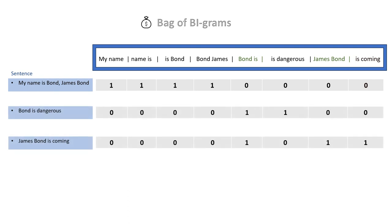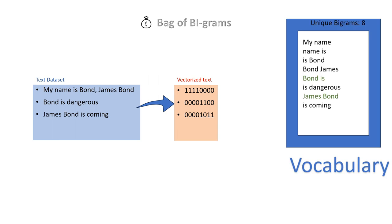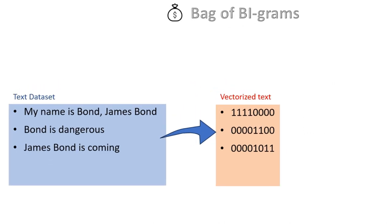We repeat this process for the other two sentences and we have our entire dataset vectorized. Because we search from the vocabulary, we always get a uniform vector length. Our bigram vocabulary had eight bigrams, and therefore every sentence is converted to an eight-digit vector, irrespective of the length of the statement.